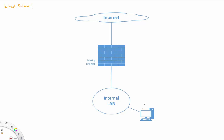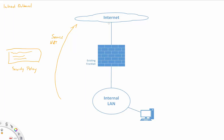Internet Outbound effectively is all of your internal clients inside of your internal network accessing the Internet - basically Internet access. The configuration elements we need to migrate here are, first of all, our security policy - all of the rules on our existing firewall. The second element is NAT, or more particularly here it is source NAT, translating all of the internal IP addresses to a public IP address on the outside so that you can communicate with the Internet. To be honest, Internet Outbound is probably the most simple job.